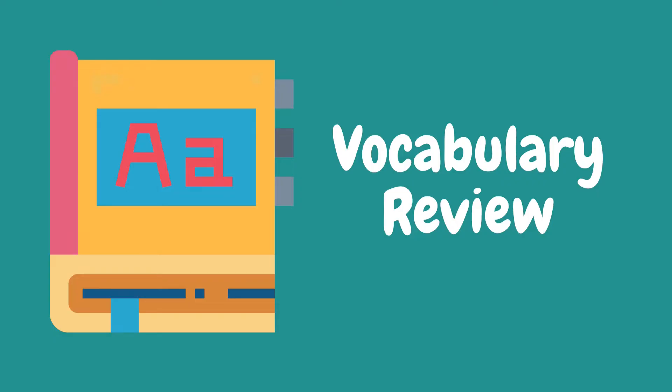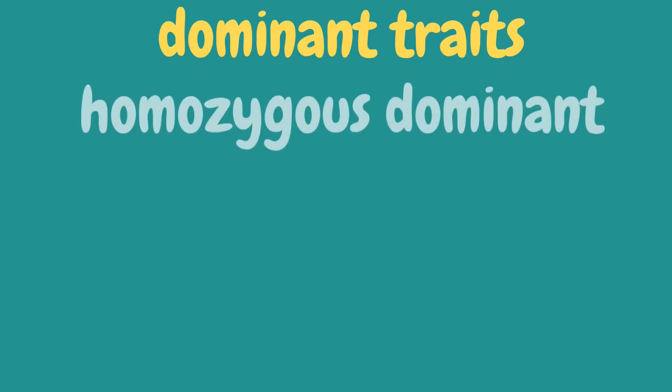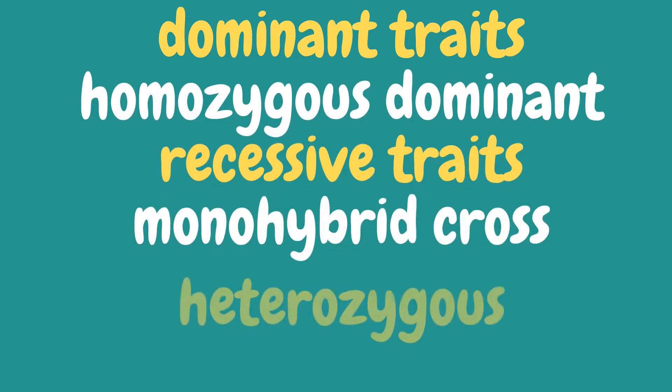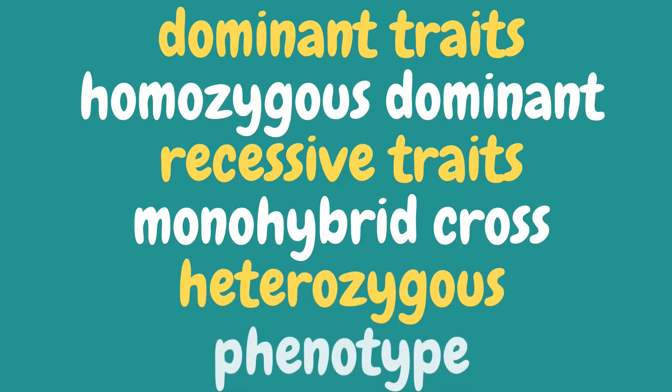But before we start with our lesson, let's review some of the terminologies we discussed about Mendelian inheritance. In the comment section below, type your answer for the definition or meaning of each word based on our discussion. The following words are: dominant traits, homozygous dominant, recessive traits, monohybrid cross, heterozygous, and phenotype.